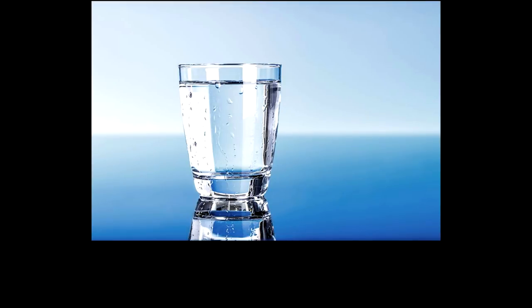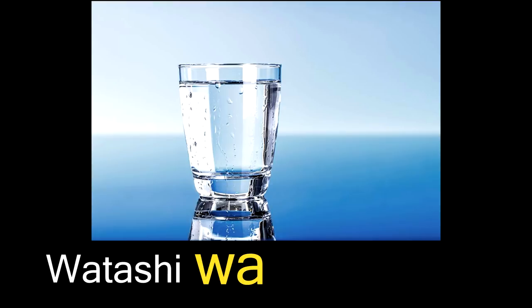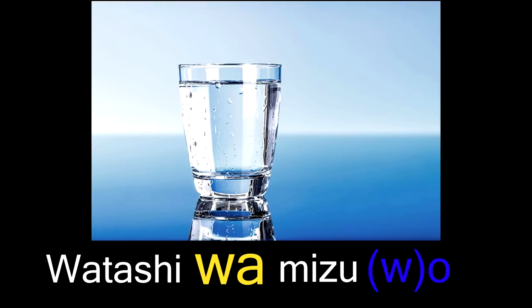Another word you would have learned in the other video is mizu. Mizu is talking about water — all kinds of water: the kind you drink, in lakes, or out of a faucet. Because it's so versatile, it's great for learning o because any number of things could be happening to it — we could be drinking it, pouring it, splashing it. Let's bring back watashi wa and add mizu o. Notice how we didn't pronounce the w even though it's technically there: watashi wa mizu o. This sentence most likely means that I interact with water using whatever verb we have. I could be drinking the water, buying it, pouring it, shaking it — whatever I'm doing, it's directly affecting the water.